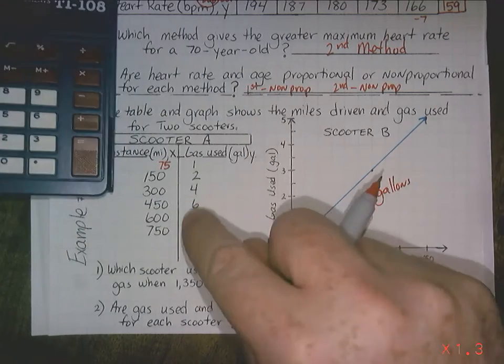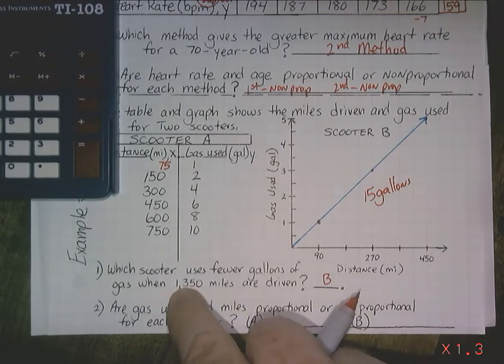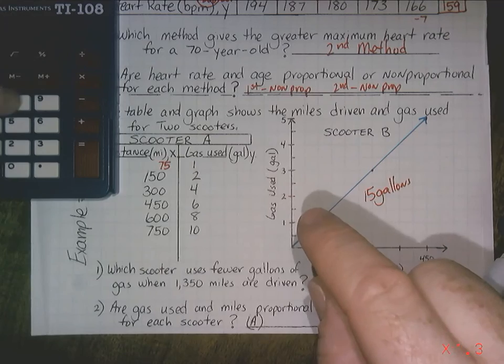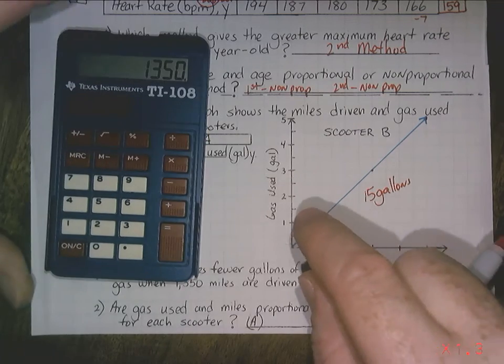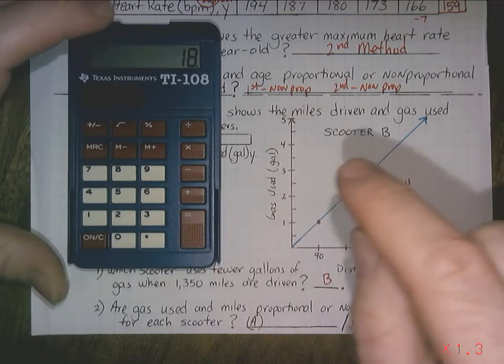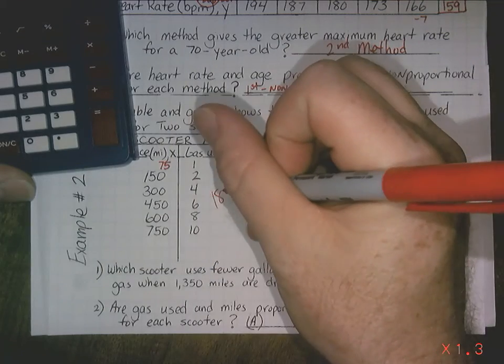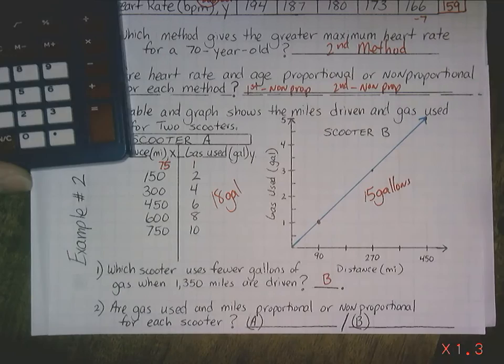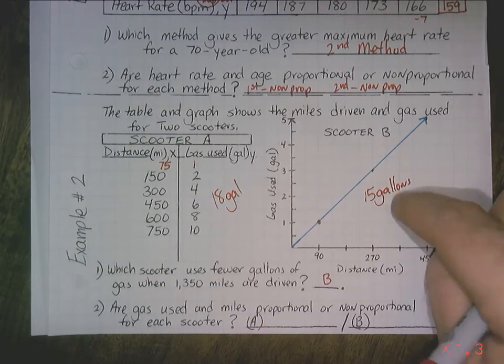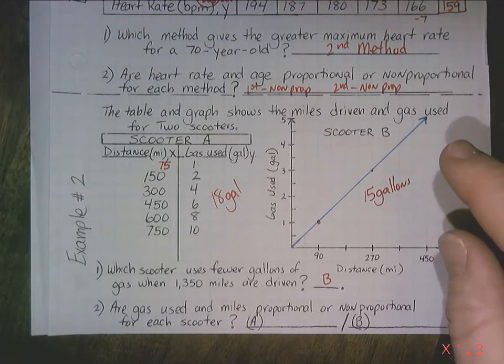So this would take 15 gallons to get to that distance. If you divide 1,350 by 75 miles to the gallon, you get 18 gallons. Well, guess what? Again, B would win. It takes less fuel for scooter B to get, you'd save 3 gallons of fuel.